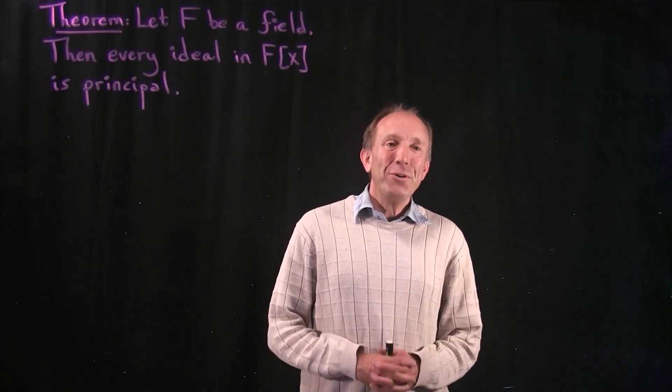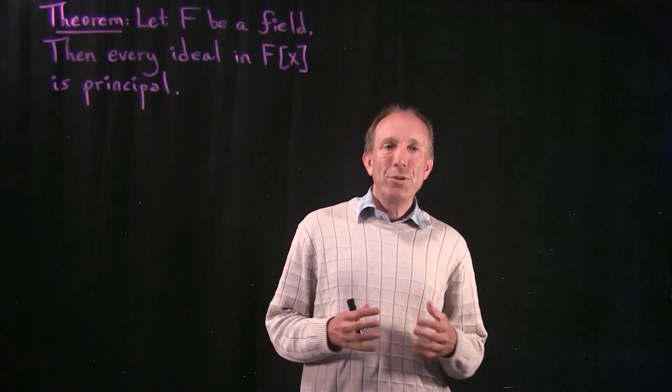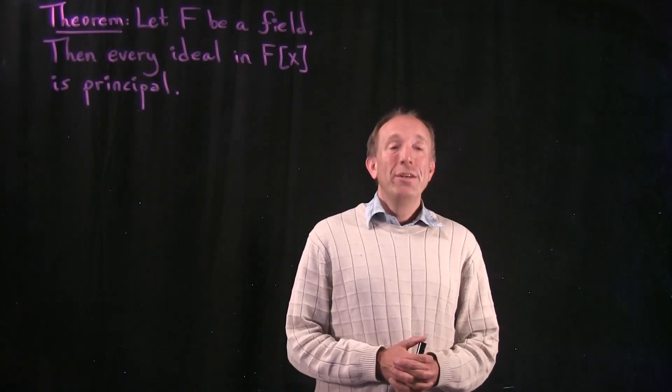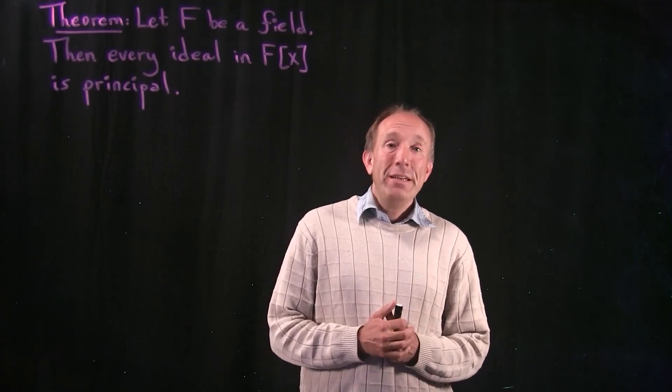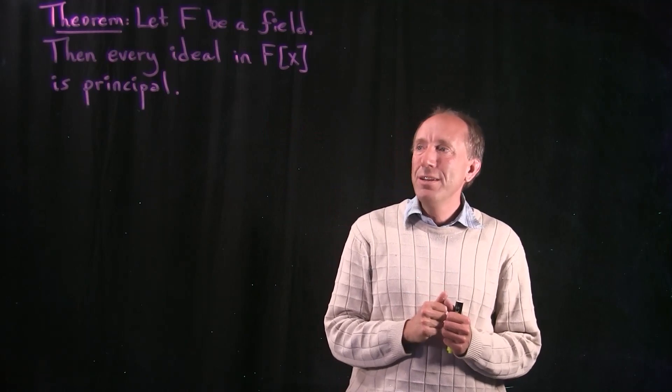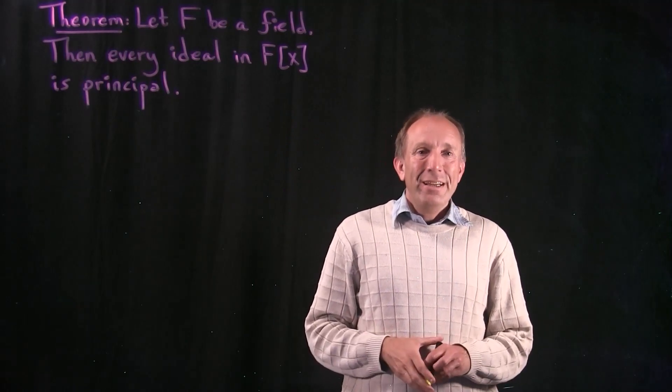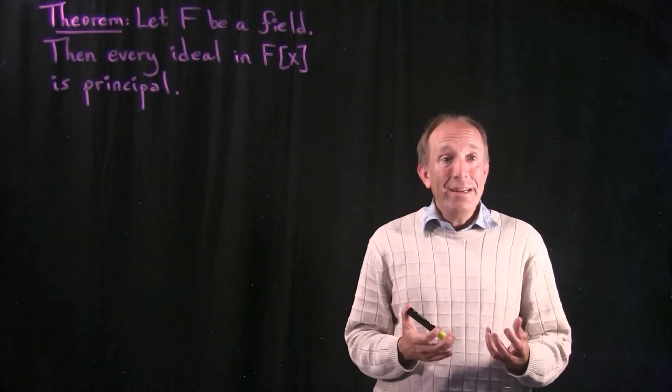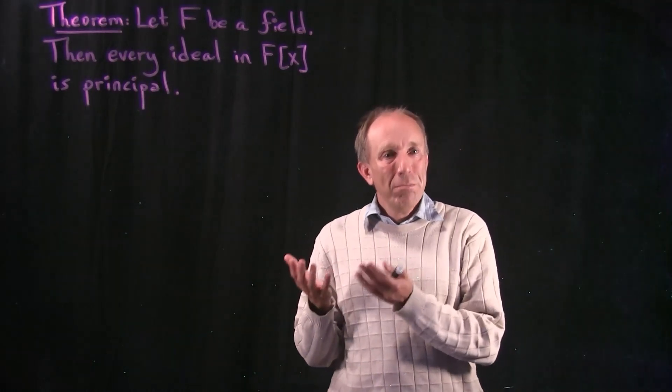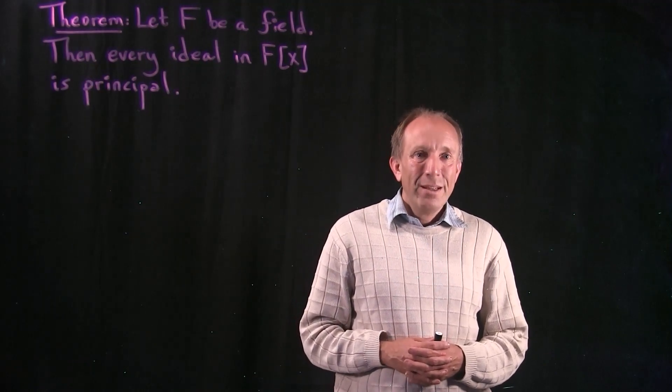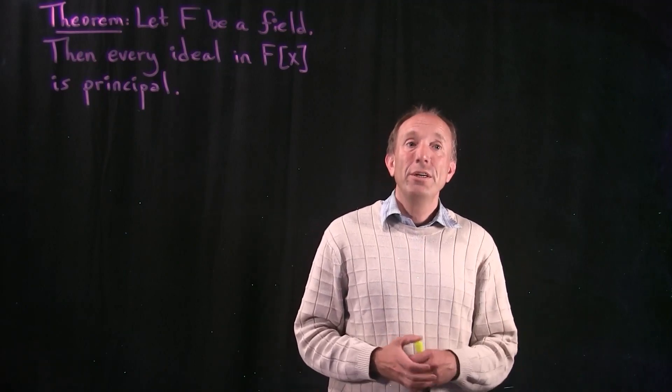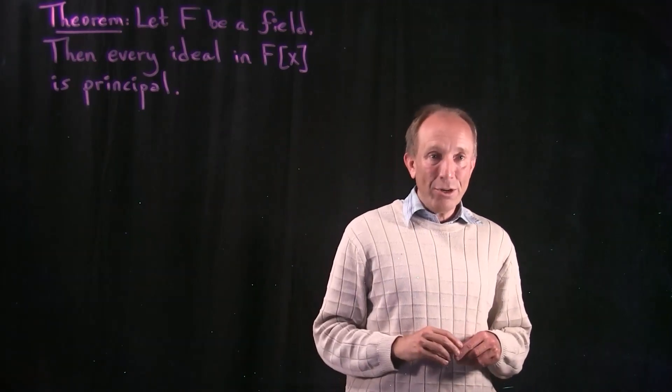Hello. In this video, I would like to prove one of the most important theorems about the ideals in the ring F[x], where F is a field. Namely, that every ideal in the polynomial ring F[x] is a principal ideal. That means that it is generated by a single polynomial, and the ideal consists of all multiples of that polynomial. This is a very valuable theorem for understanding the structure of the ideals of a polynomial ring over a field.